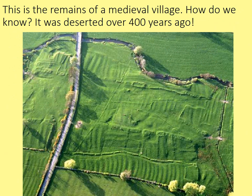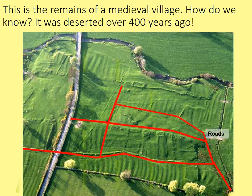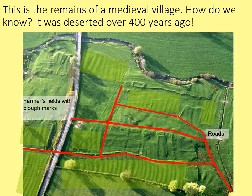We're going to look at a little bit of background. It's important to understand what England was like at the time of the Peasants' Revolt in 1381. This is the remains of a medieval village — how do we know? Because it was deserted over 400 years ago. You might be able to make out in the fields the roads and lanes connecting up all the buildings, the remains of the ploughed fields where the peasants grew their crops, and even some of the buried buildings including a church. But what happened to this village? Why did it disappear?